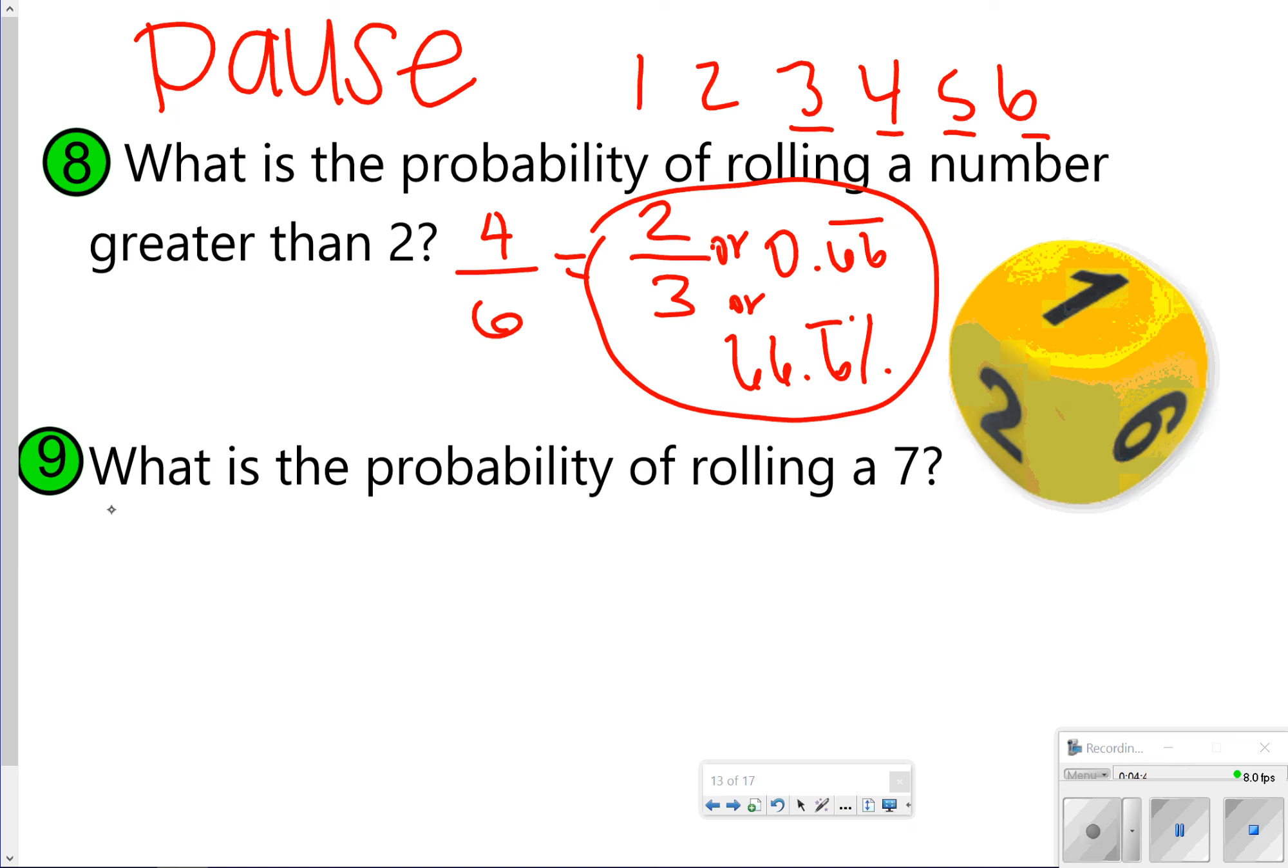Number 9, though, says what's the probability of rolling a 7? There's absolutely no 7 on here. So there are zero chances out of 6 that you could roll a 7, or you could write 0 or 0%.